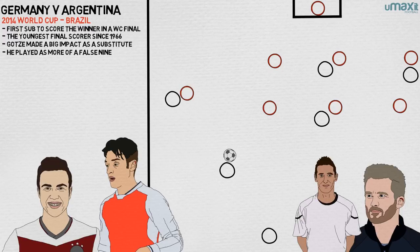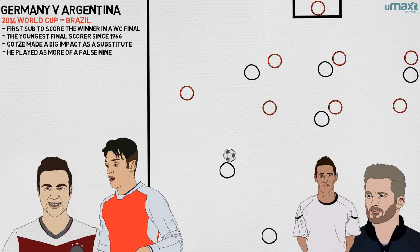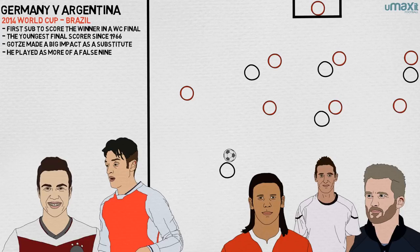Gotze darted inside, across Zabaleta and towards the space between the full-back and the right centre-back, Martin Di Micheleis, checking slightly halfway before accelerating quickly. This allowed Schöller to hit the wide space vacated by Zabaleta.